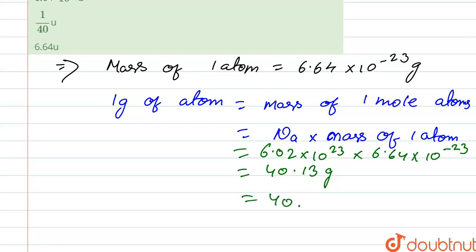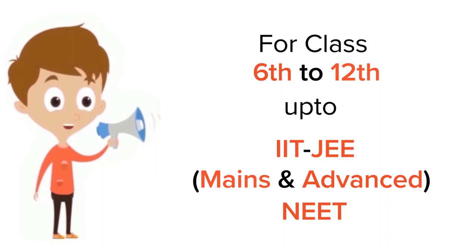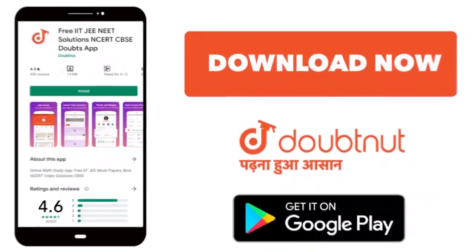That is equal to 40u. So our correct option is option first. Thank you. For class 6th to 12th, up to IIT-JEE and NEET level, trusted by more than 5 crore students, download Doubtnet app today.